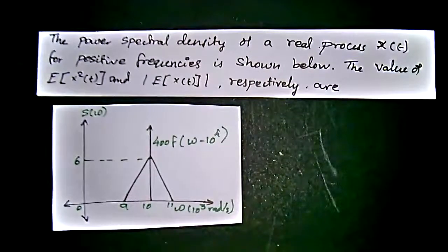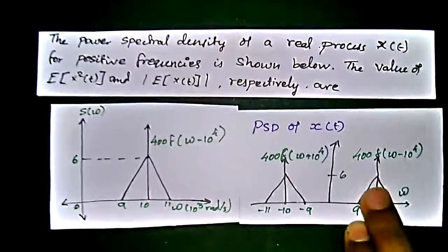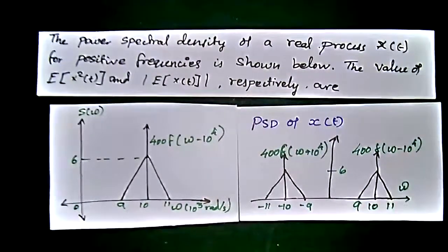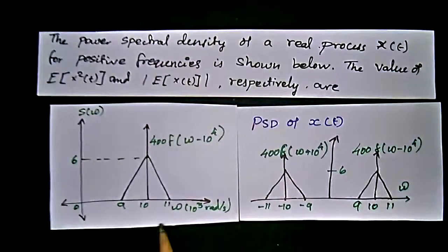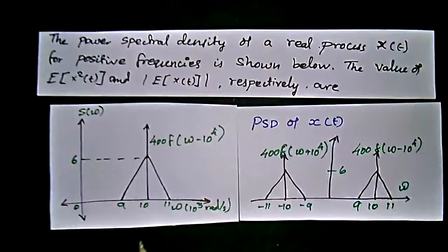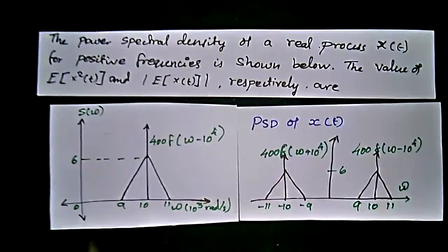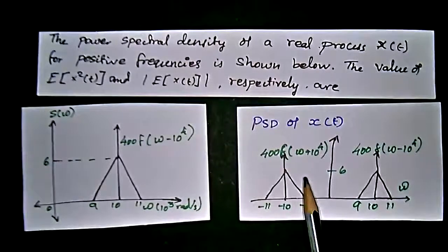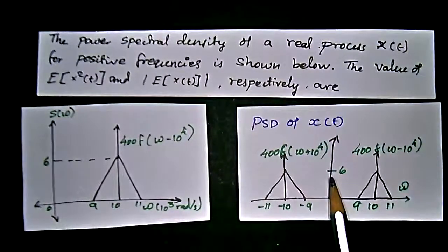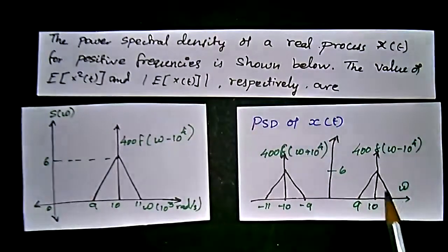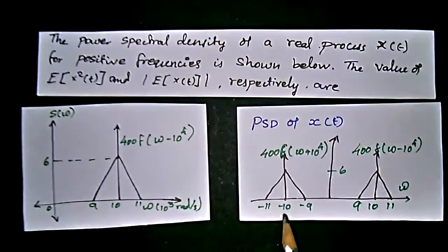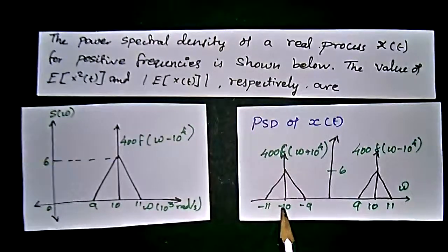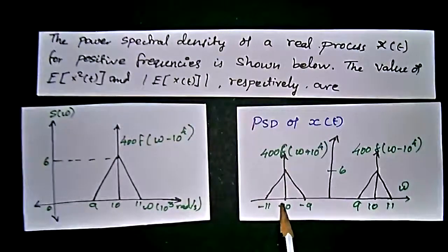PSD, the power spectral density of a real process, would be on both axes. Here we have only one coordinate, the plus values. There is no minus value. So we should go for both sides. Like here we have the same thing, and we just flip the mirror image. The power spectral density of X(t) will get like this.